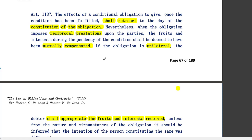A classic example for suspensive condition: 'I will give you one million on the condition that you marry Gerald Anderson on September 30.' There is an expectancy or hope that you will receive one million when September 30 arrives, if the condition happens. For a resolutory condition example: 'I will give you 10,000 monthly until you finish this semester,' which ends in December. At the end of December, the right to receive support for education will be extinguished.